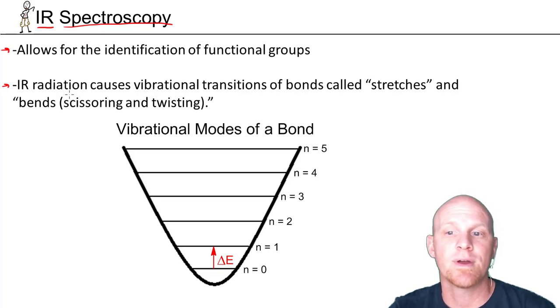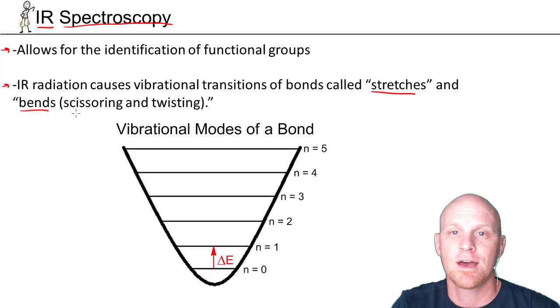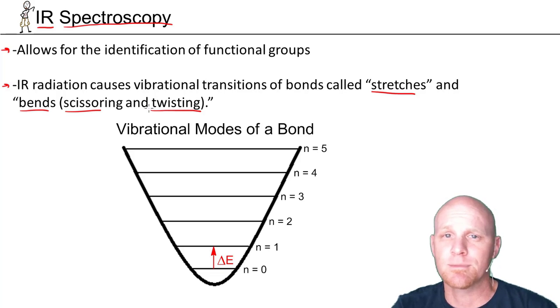Infrared radiation causes vibrational transitions. We call these transitions either stretches or bends. The two types of bends you should be familiar with are scissoring and twisting. It makes a great multiple choice question: which of the following are common vibrational transitions in infrared spectroscopy? You should understand stretches, bends, and then the two specific types of bends, scissoring and twisting. We're going to spend a whole lot of time talking about the stretches and almost none talking about the bends.